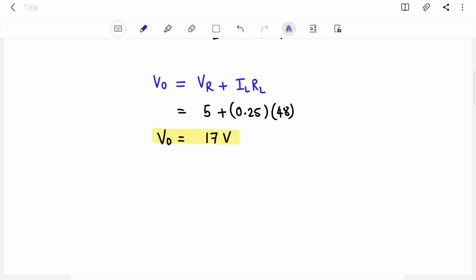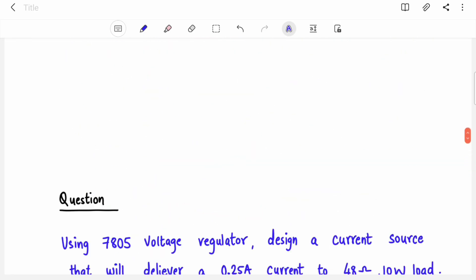Now we will find out output voltage and then we will find out minimum input voltage required. So what is the equation of output voltage? VR plus IL into RL. Again VR is 5 volt. IL is 0.25 and RL is also given, that is load of 48 ohms. So just calculate it and it will come out as 17 volt. So our output voltage is 17 volt. Now just add 2 in it and you will get VIN. So that was quite easy.